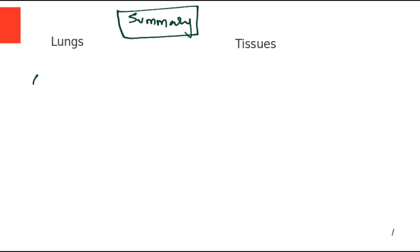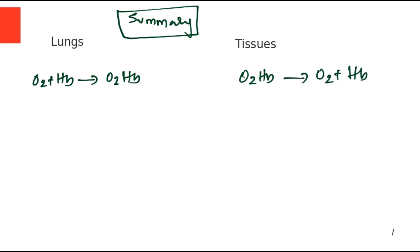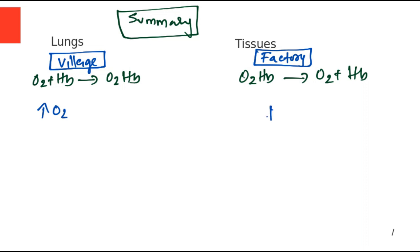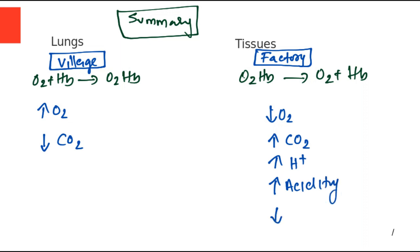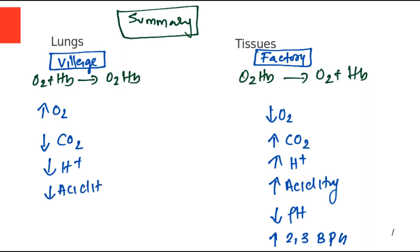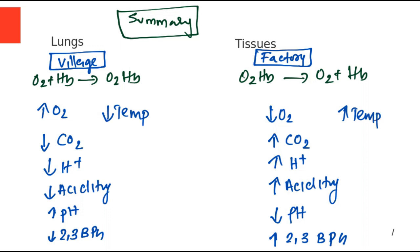Let's summarize everything. We have two places — lungs and tissues. In the lungs, oxygen and hemoglobin combine to form oxyhemoglobin; in the tissues, oxyhemoglobin dissociates into oxygen and hemoglobin. The lungs are like a village and the tissues are like a factory area. In the lungs: high oxygen, low carbon dioxide. In the tissues: high carbon dioxide, high H⁺ concentration leading to high acidity and low pH, and high 2,3-BPG due to high energy demand. In the lungs: low H⁺, low acidity, high pH, and decreased 2,3-BPG favoring formation of oxyhemoglobin. Finally, temperature in the lungs is low and in the tissues it is high. This complete list explains the association and dissociation of oxyhemoglobin.